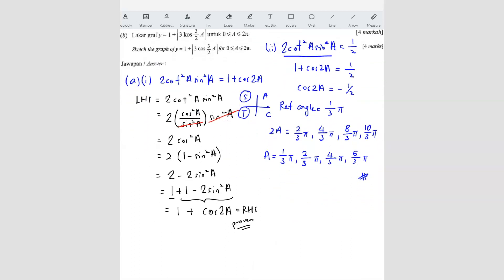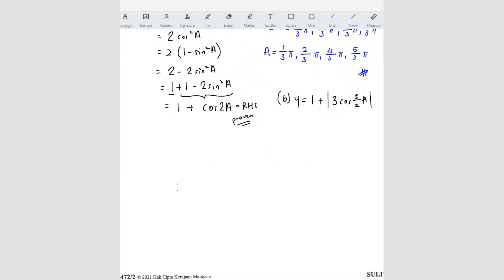Question B, they asked to sketch. Now sketching, we have to do step by step by step. Our question here is y equals to 1 plus the modulus of 3 cos 3 over 2 A. So we have to do step by step. So first part we want to do is we want to do what is inside here. So we know that cos 3 over 2 A, that means 3 over 2 means 1 and a half cycle. So that means your graph, you know cos graph is like this.